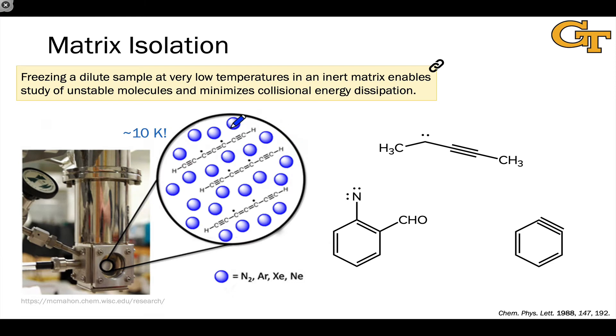The technique of matrix isolation involves freezing a dilute sample, and it's important that the sample be dilute so that the molecules of interest are relatively far apart from one another at very low temperatures, and we're talking tens of kelvins—liquid nitrogen temperatures and below. In a matrix that is inert, so the blue molecules you see here in this zoomed in view are inert molecules that don't interact in a profound way with our molecules of interest.